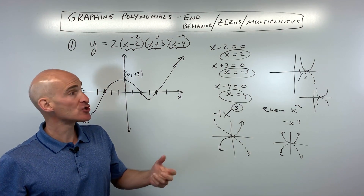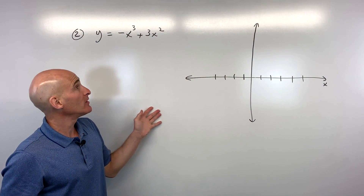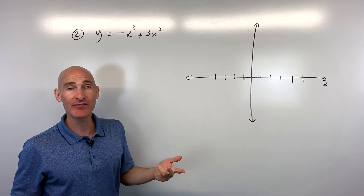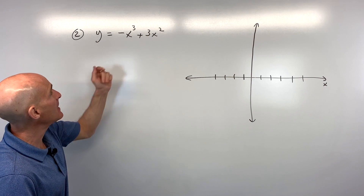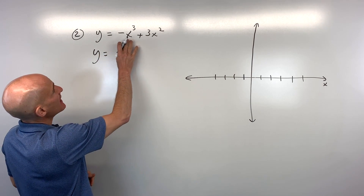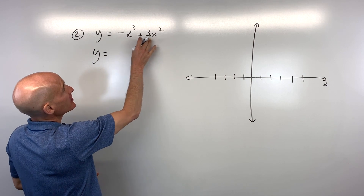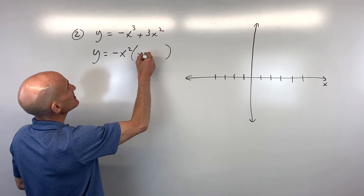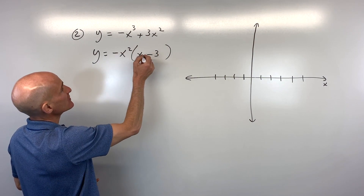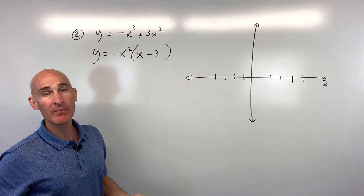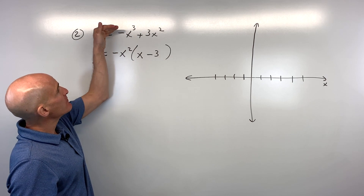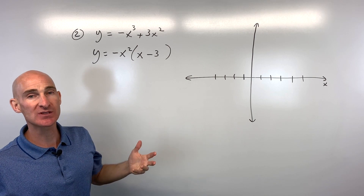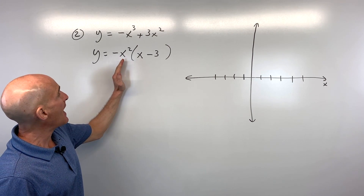Example 2: y equals negative x cubed plus 3x squared. To graph this, first factor it. Factor out negative x squared to get negative x squared times (x minus 3). You can verify by distributing the negative x squared back in to recover the original polynomial. Always write the polynomial in descending order — highest power down to lowest — which is standard form.